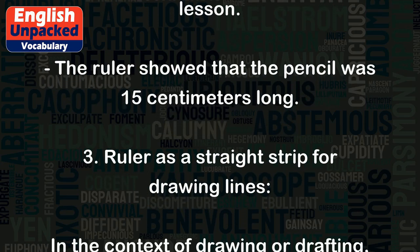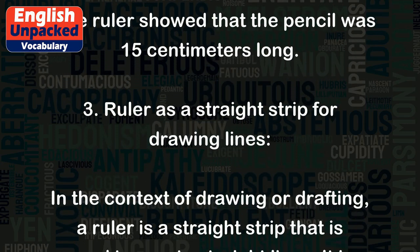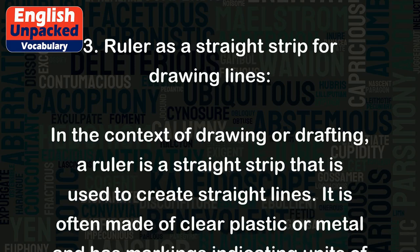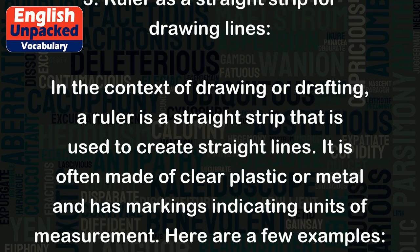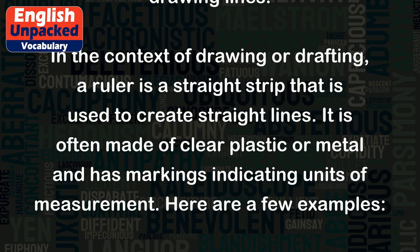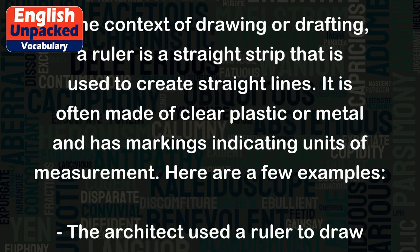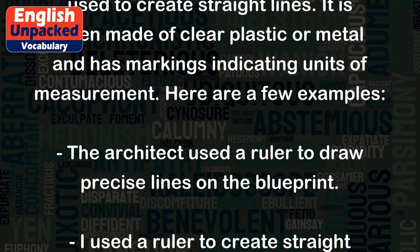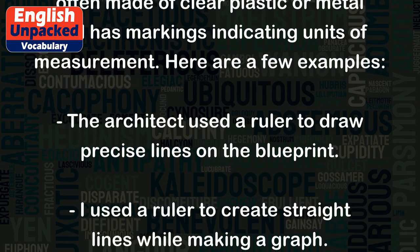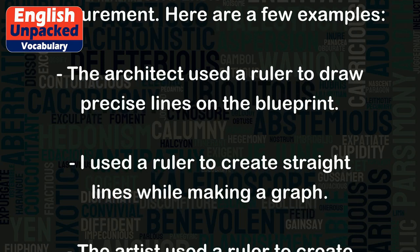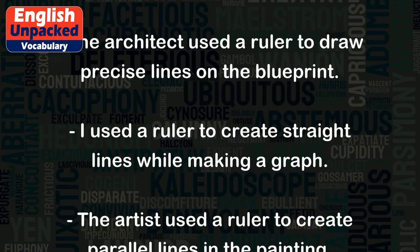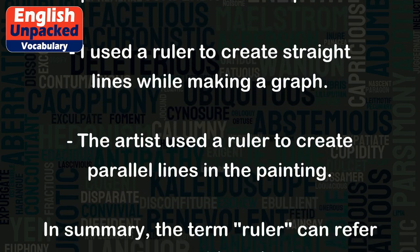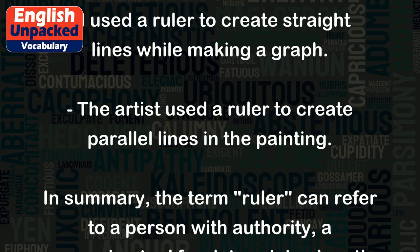3. Ruler as a straight strip for drawing lines. In the context of drawing or drafting, a ruler is a straight strip that is used to create straight lines. It is often made of clear plastic or metal and has markings indicating units of measurement. Here are a few examples: The architect used a ruler to draw precise lines on the blueprint. I used a ruler to create straight lines while making a graph. The artist used a ruler to create parallel lines in the painting.